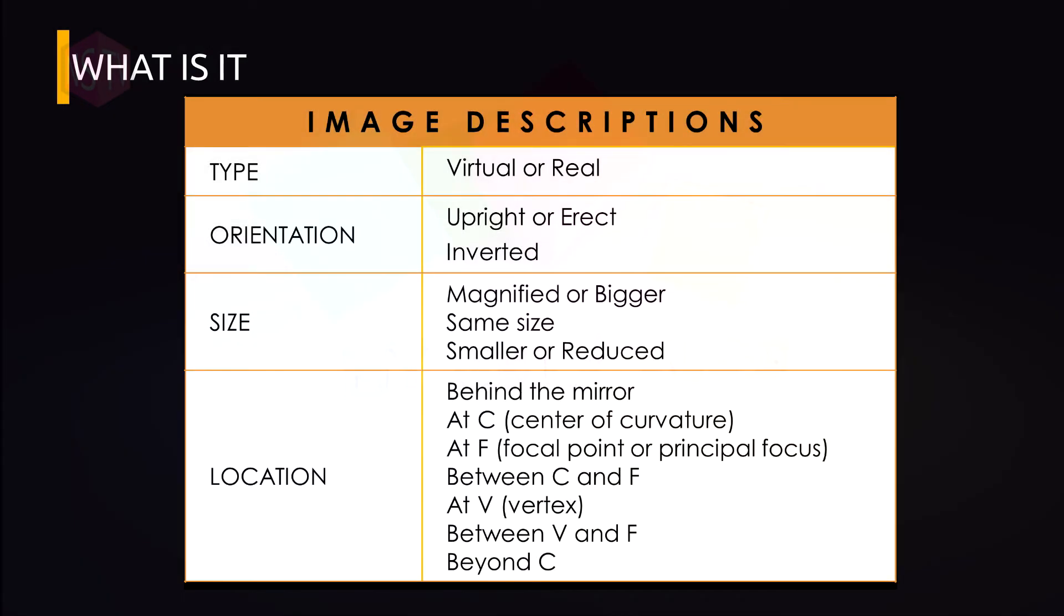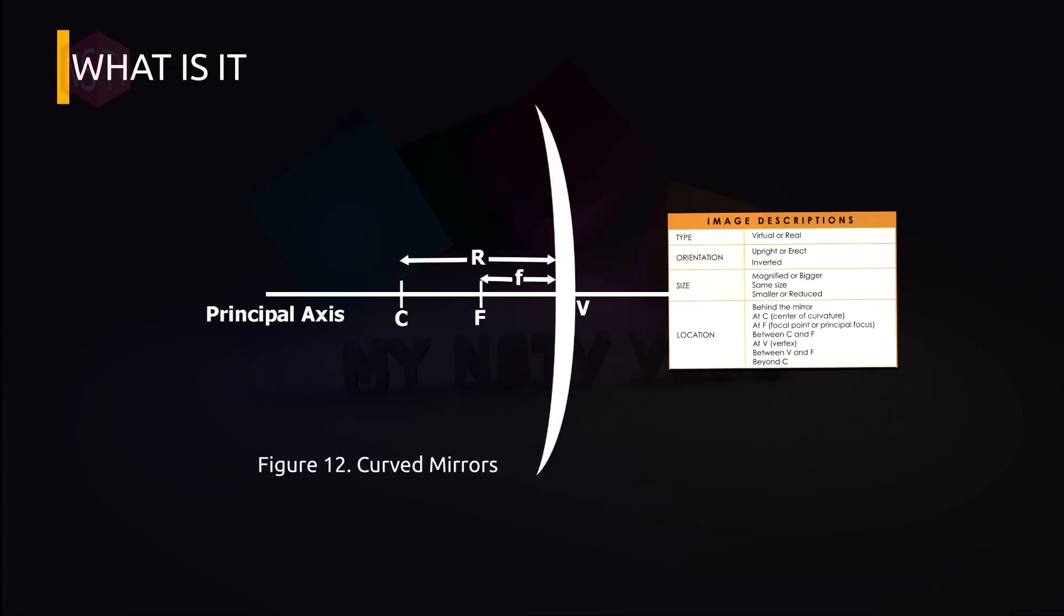So in describing the type of image formed, the terms virtual and real will be used. In describing the orientation of image, the terms upright and erect and inverted will be used. To describe the size of the image, the terms magnified or bigger, same size, smaller or reduced will be used. To determine the location of the image, these are the following terms to be used: behind the mirror, in the different parts of the curved mirror such as center of curvature, at the focal point or principal focus, between C and F, at vertex, between the vertex and the focal point, and finally, beyond the center of curvature. So you can refer to figure 12 on page 11 of your module.